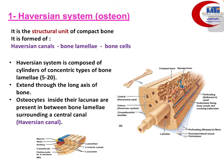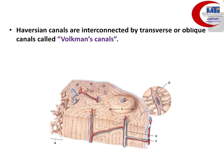Each Haversian system is formed of around 5 to 20 concentric layers of calcified bone matrix. We can see the periosteum covering the long bone, then the outer circumferential lamellae, then the Haversian system with the Haversian canal in its central part. Volkmann's canals connect Haversian canals to the medullary cavities on the inside, to adjacent Haversian canals, and to blood vessels in the periosteum on the outside.